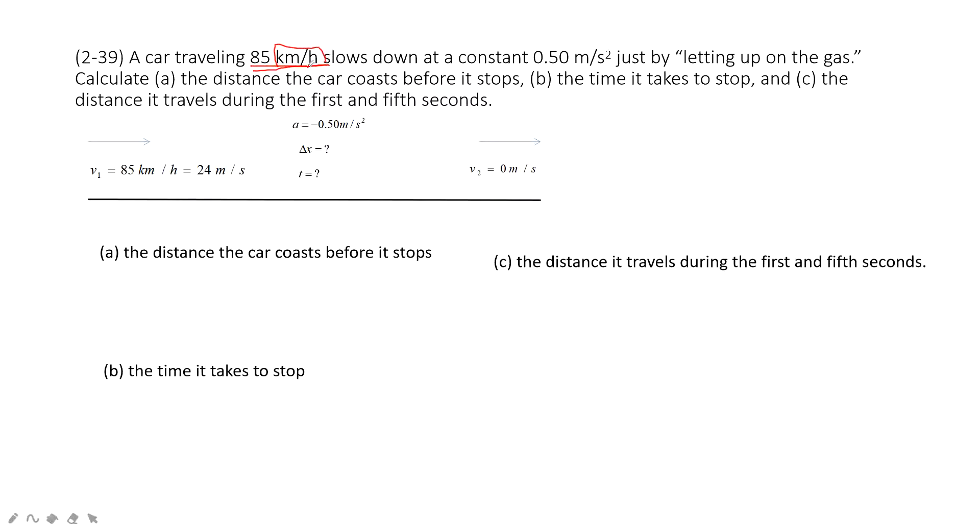And then slows down, slows down, acceleration is negative. At a constant, this one tells you magnitude of the acceleration. Therefore, we can write it as negative 0.5 meter per second squared.